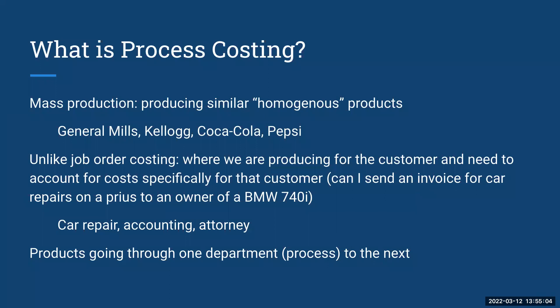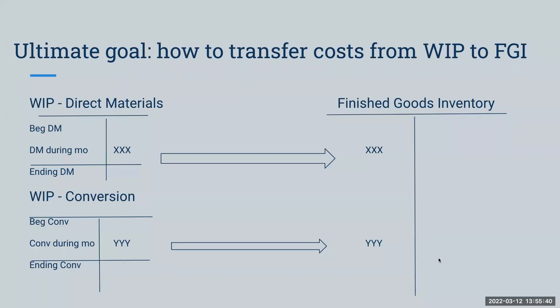That's why if we're a mass producer of product — obviously we want everybody to enjoy Coca-Cola and have the Pepsi smile — when we're doing mass production, process costing is going to be our better deal. And when we're looking at process costing, more than likely you're going to have multiple different stages of production, but for our introduction to managerial accounting course, we're really just going to be focusing on one particular department.